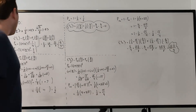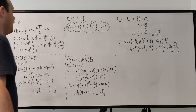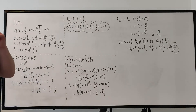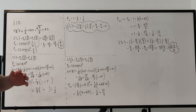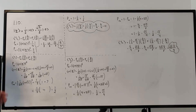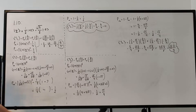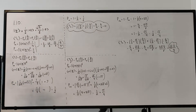Hello everyone, welcome to Problem 1.10 of John Townsend's A Modern Approach to Quantum Mechanics. I'm not really going to state the problem statement specifically for copyright reasons, but if you have the book, go to Problem 1.10, read it, and we'll get started on the problem.